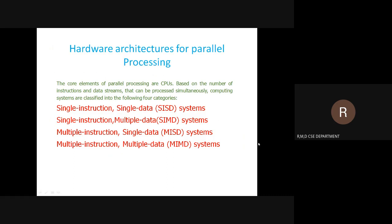We have four types of the computer system. First is Single Instruction Single Data. Second is Single Instruction Multiple Data. Third is Multiple Instruction Single Data. And fourth is Multiple Instruction Multiple Data. We will see them one after the other.